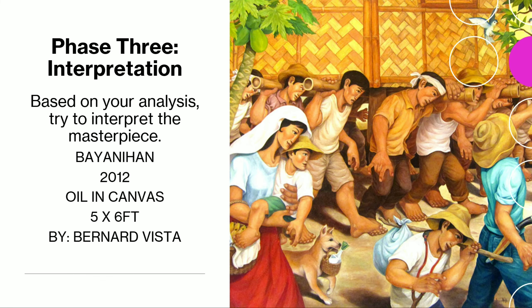Susunod ay Phase 3: Interpretation. Pag sinabi nating interpretation, i-interpret na natin kung ano yung nakapaloob sa larawan. Based on your own analysis, try to interpret the masterpiece. Sa interpretasyong ito, halimbawa sa larawang ito — Bayanihan, 2012, Oil on Canvas, 5 by 6 feet, by Bernard Vista — i-interpret mo na kung ano yung nakapaloob dito sa larawan at kung ano yung nais ipahiwatig ng mangguguhit.